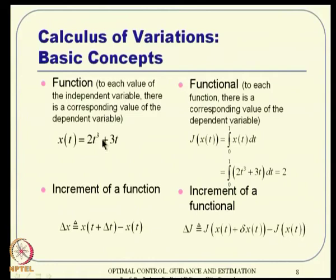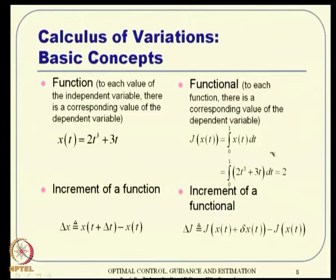A function maps each value of the independent variable to a corresponding dependent value. A functional maps each function to a corresponding value. The key difference: to each value of the independent variable there is a corresponding value in a function, whereas to each function there is a corresponding value in a functional.